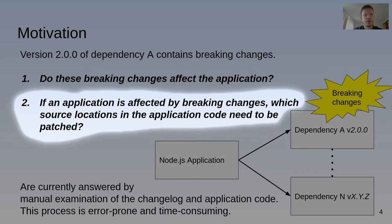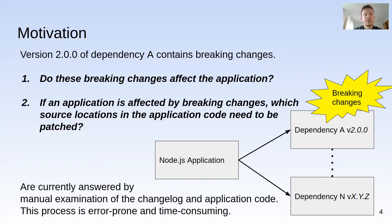Afterwards, the application developer must also identify the source locations in the application code affected by breaking changes. For a statically typed language like Java, the type system can help the developer with this task. But for JavaScript, no good solutions for this problem existed prior to our work.